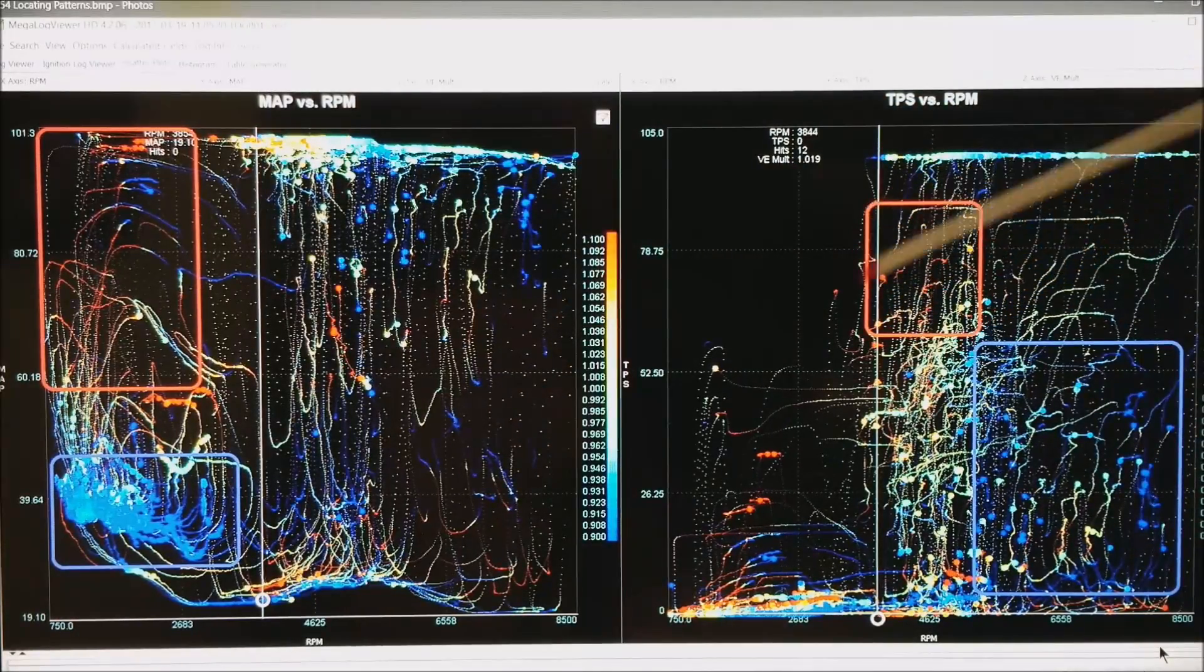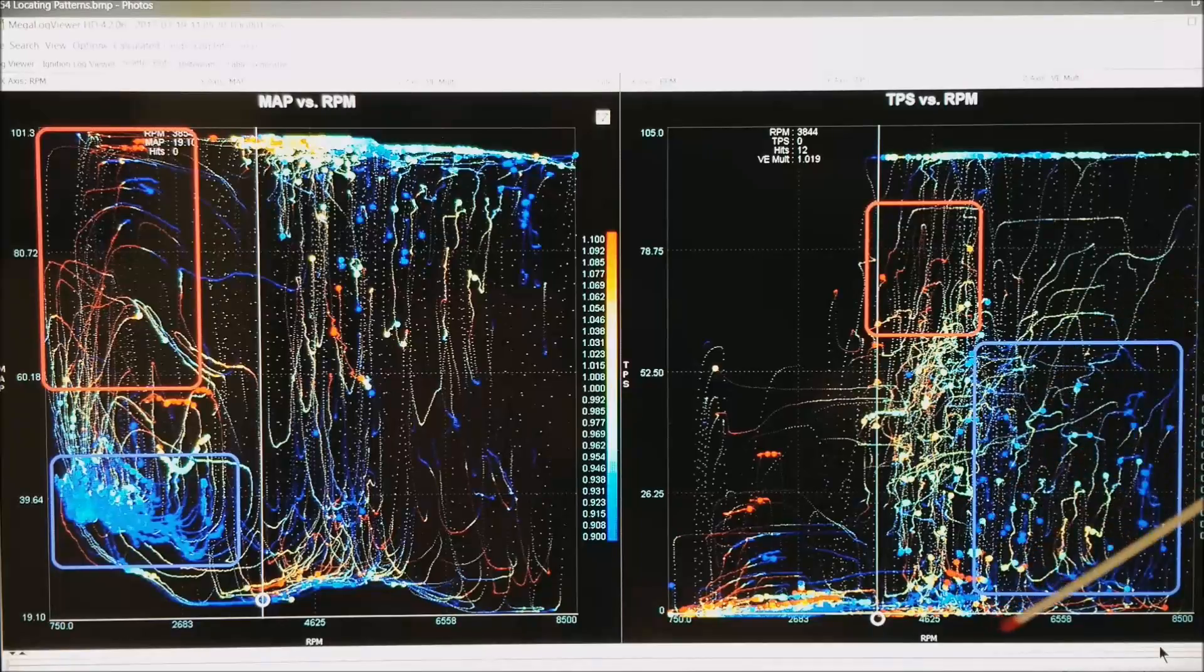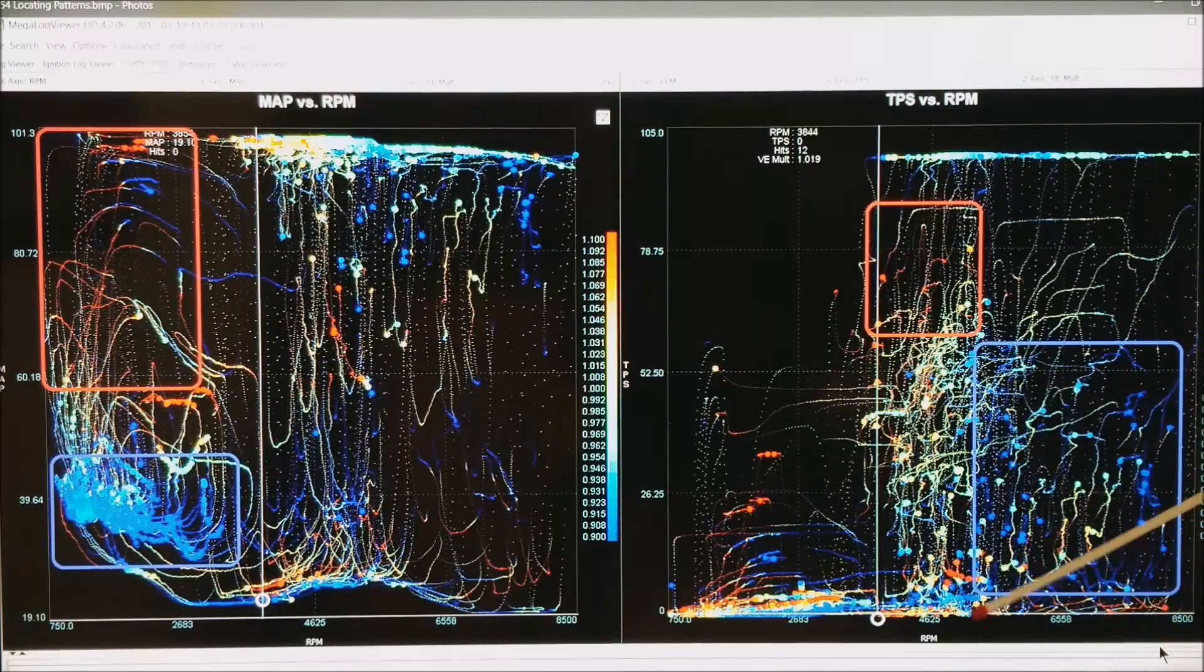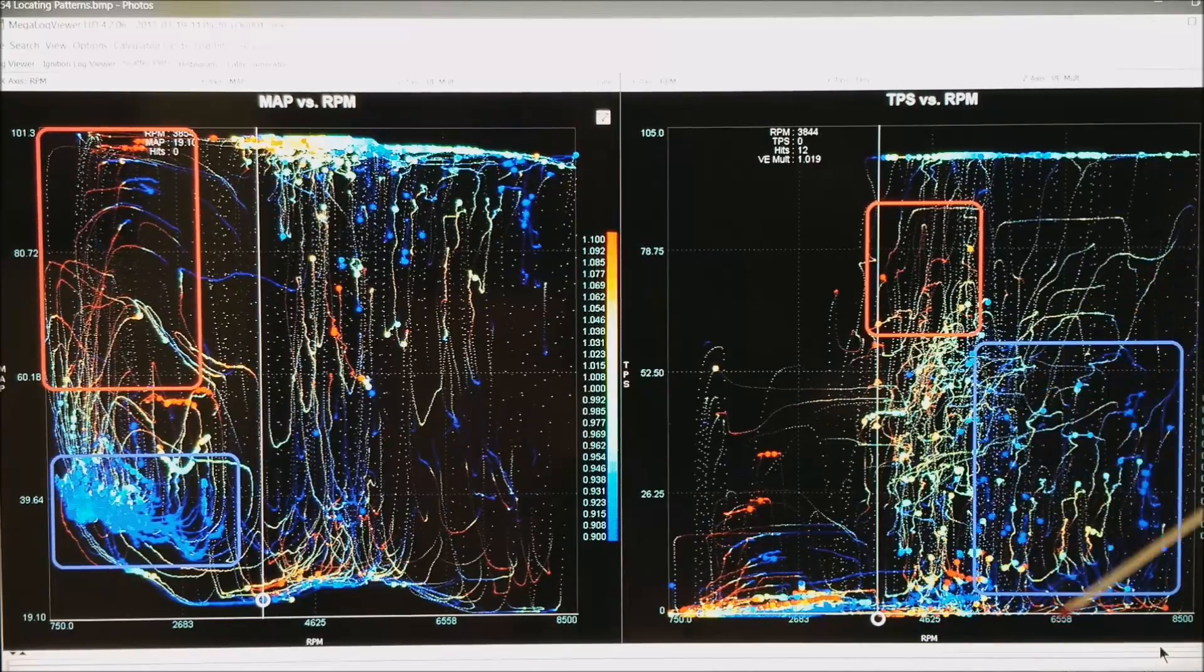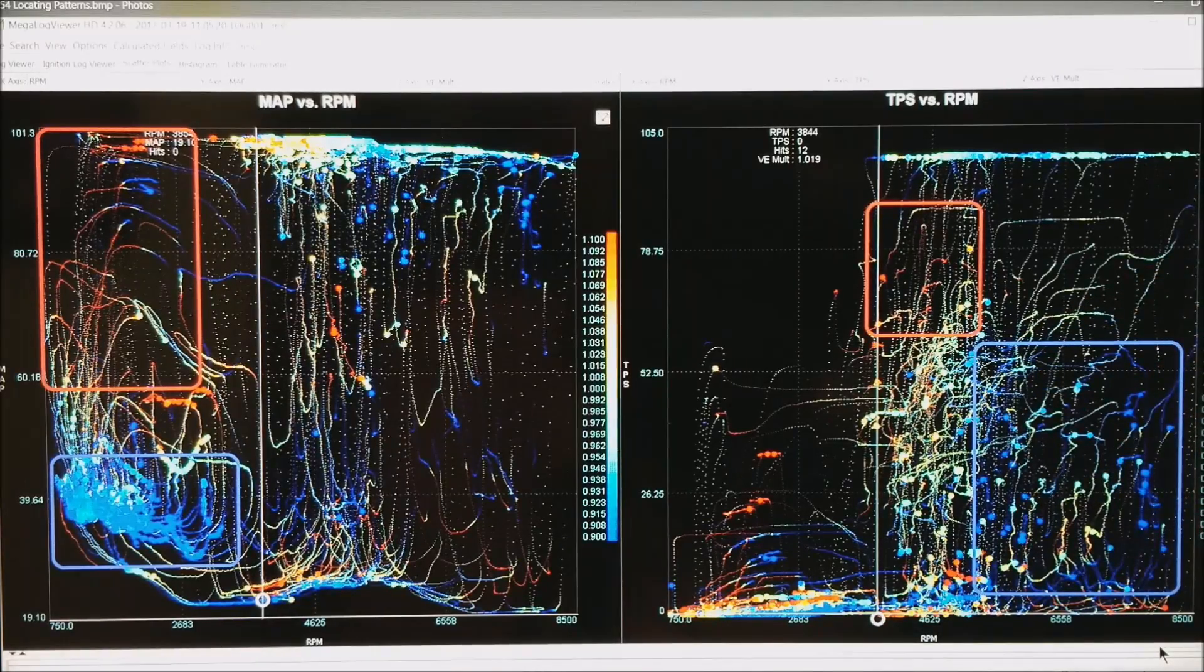But in reality, it is what I have backed out of the throttle. High up in the RPM range, this is up from about 5,000 up to about 8,500. I am rich all in this area, meaning a 0.9 correction.